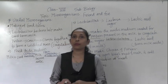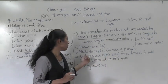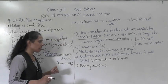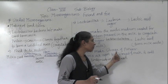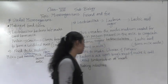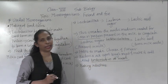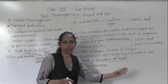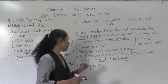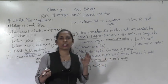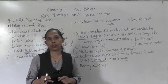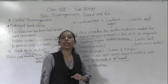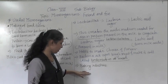In the same way, paneer and cheese can also be prepared with the help of Lactobacillus bacteria. Next, bacteria act upon tough meat and make it soft — this is called tenderization of meat. In tenderization, certain bacteria act upon tough meat and because of that bacterial action, the tough meat becomes soft or tender.